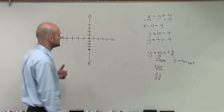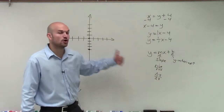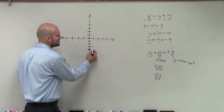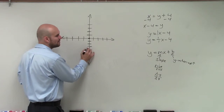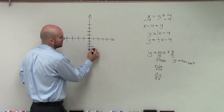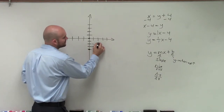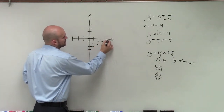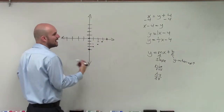The slope tells us the change in y values over the change in x. So if my change in y is positive 1, that means from my y-intercept I'm going to go up 1. The change in x is positive 1, so I go to the right 1. I'm just going to continue this pattern for all my points.